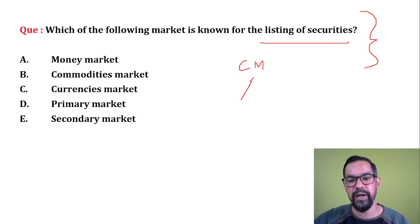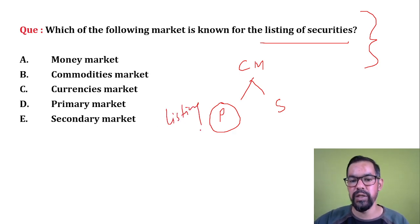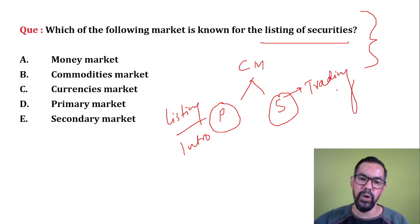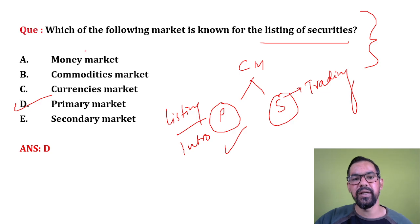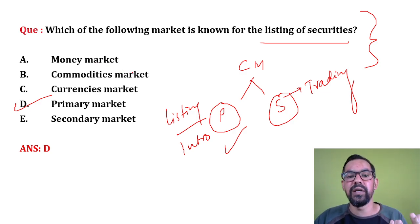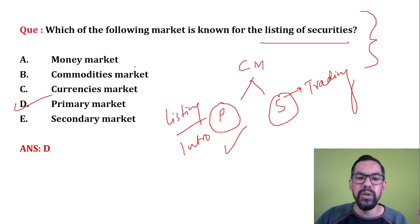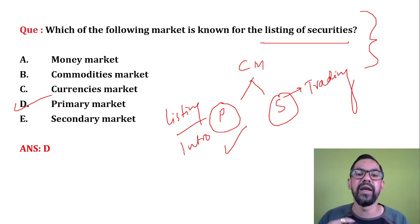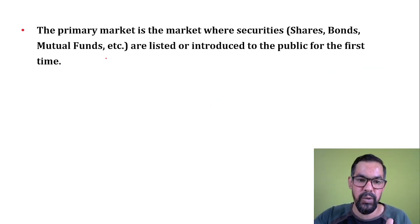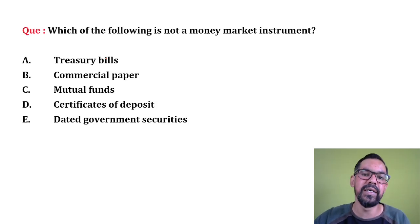Next question: which market is known for the listing of securities? Capital market is further classified into primary and secondary. Primary market is known for listing or the introduction of securities. Secondary market is known for trading — that is, buying and selling of securities. So the correct answer is primary market. Money market is where companies and governments fulfill short-term requirements. Commodities market deals in raw commodities like gold, silver, crude oil, and agricultural commodities. Currencies or forex market deals in currency pairs.